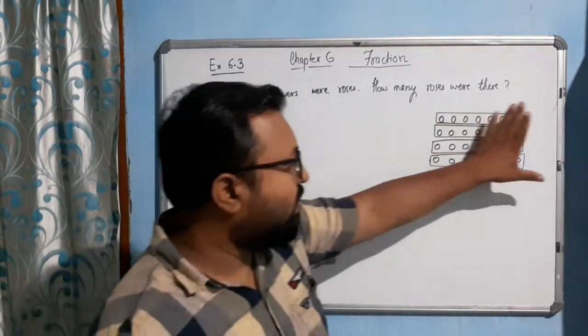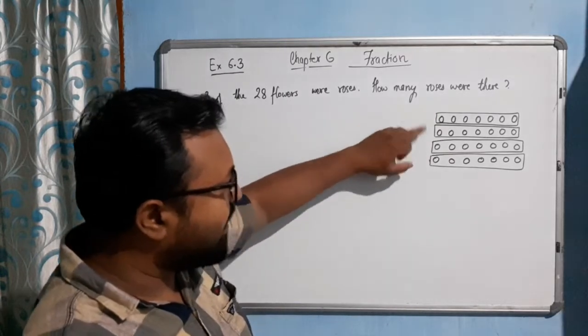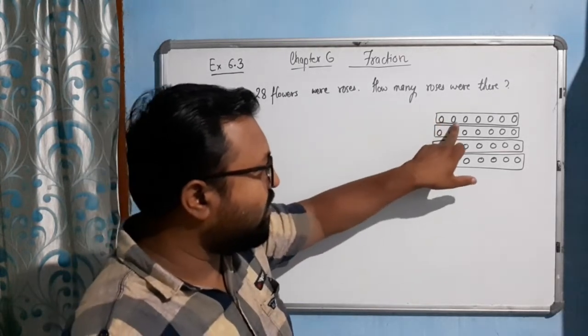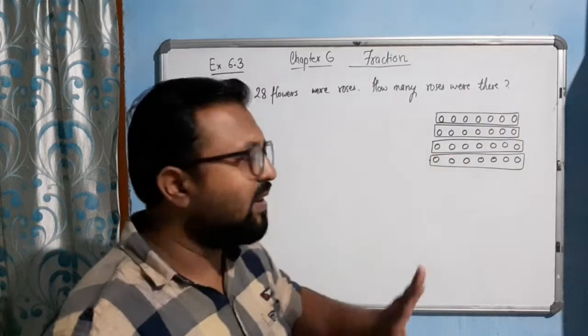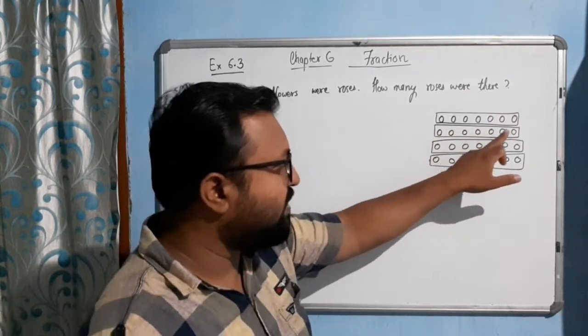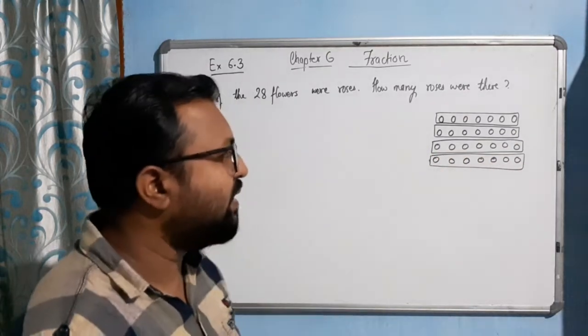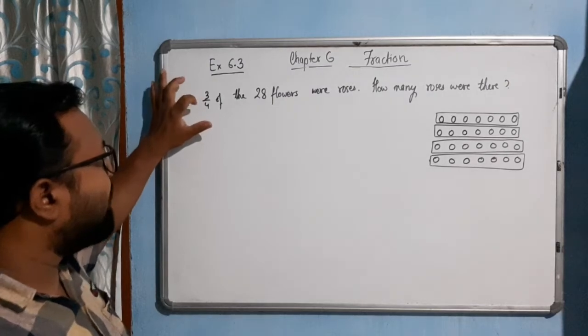So now twenty-eight flowers in each packet, these are packets, and each packet contains how many flowers? One two three four five six seven. See all packets are containing seven flowers equally.